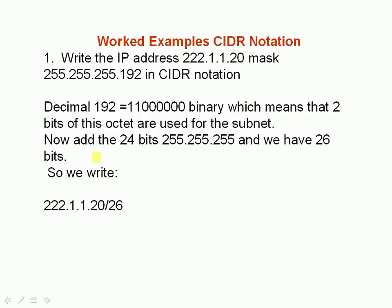A worked example using CIDR notation: write the IP address 222.1.1.20 and the mask in CIDR notation. We convert 192 to binary using the table, and that's what it looks like in binary, which means 2 bits of this octet are used for the subnet. Now add the 24 bits plus the 2, giving us 26 bits. So the subnet mask uses 26 bits, and we write it as 222.1.1.20/26, because 26 bits have been used for the mask.